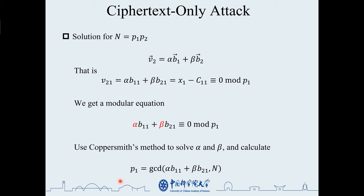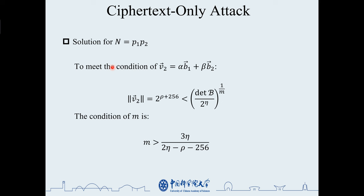To meet the condition that v2 equals alpha b1 plus beta b2, we used a Gaussian heuristic and wanted the norm of v2 to be less than this value. The condition of the number of samples m is obtained.